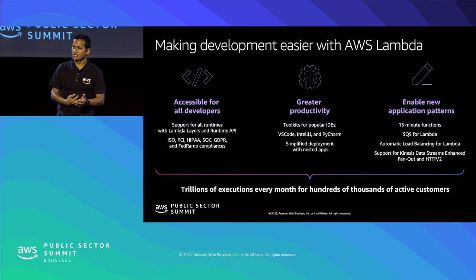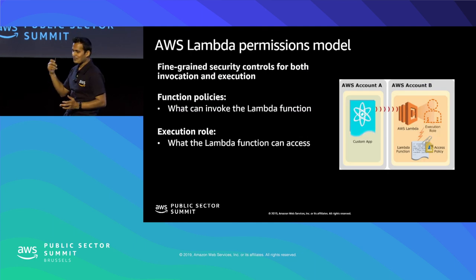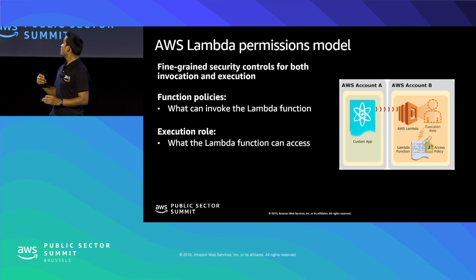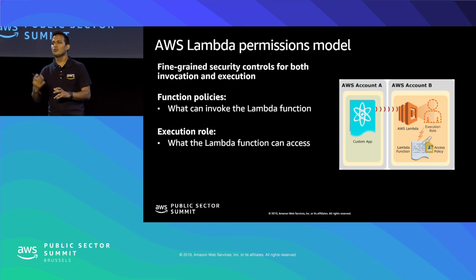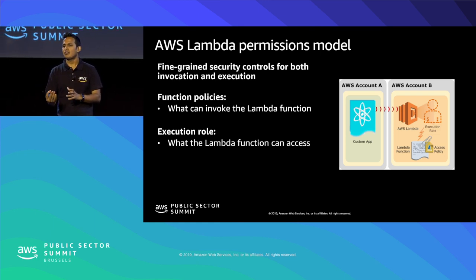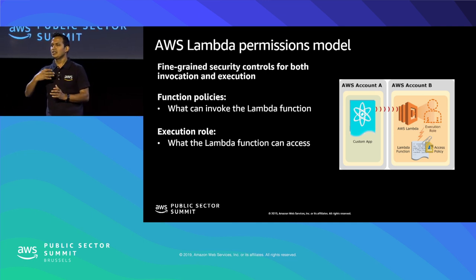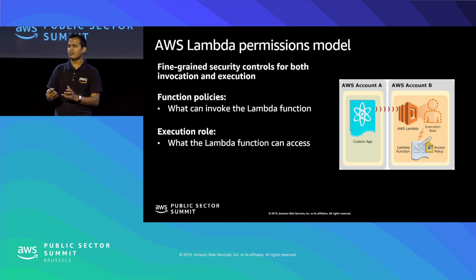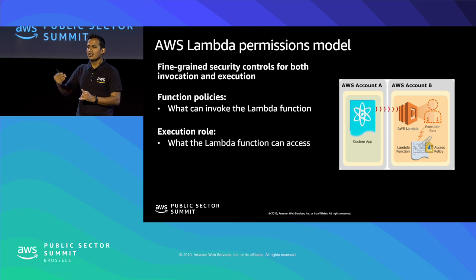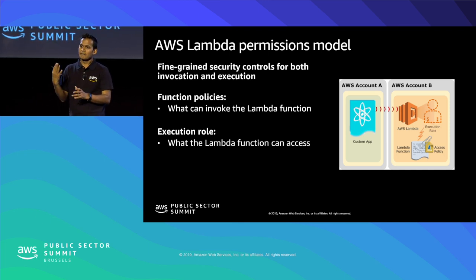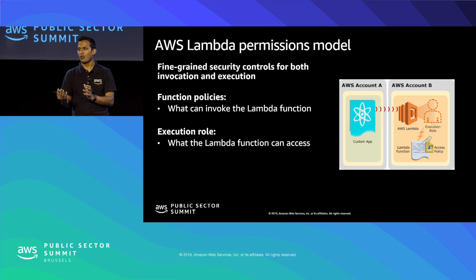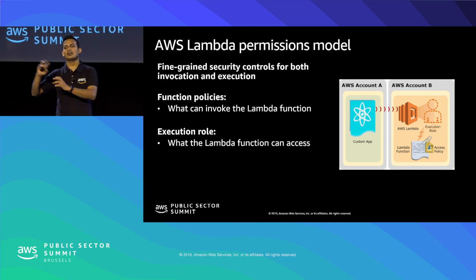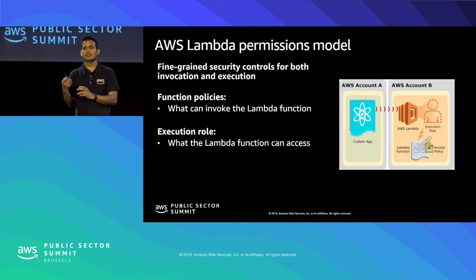When it comes to permissions, there are two important models. Function policies define who can invoke the Lambda function — for example API Gateway or an event stream. Execution policies define what the Lambda function can do — for instance, if the function needs to download or upload a file to S3, you define an IAM role granting that permission. These are the two security constructs with Lambda.